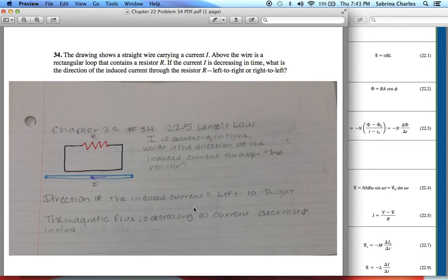I got this answer because at the location of the loop the magnetic field produced by the current I is directed into the page. This can be verified by using the right hand rule number two. The current is decreasing so thus the magnetic field is decreasing as well. Therefore the magnetic flux that penetrates the loop is decreasing.